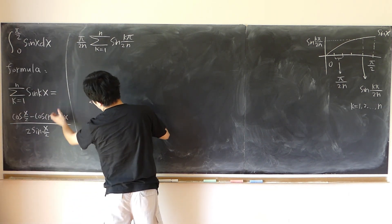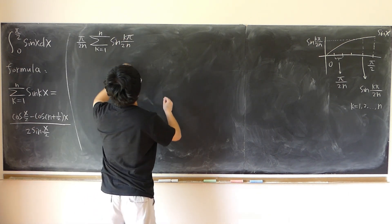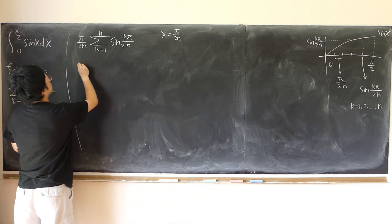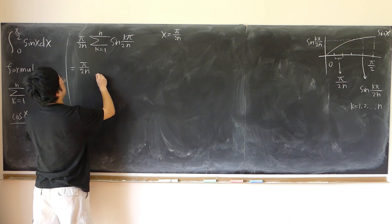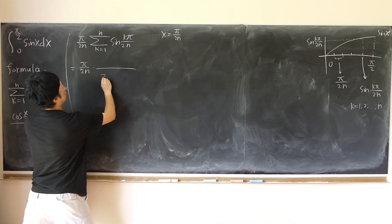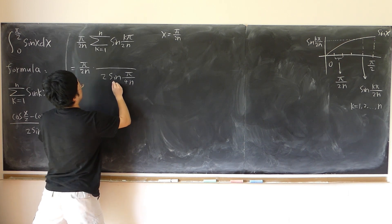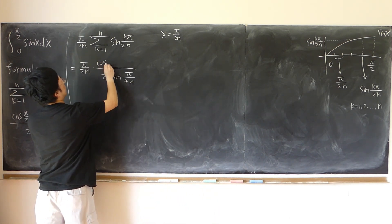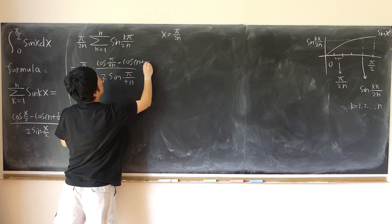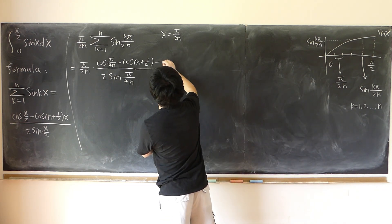I'm going to use the formula I just proved. This is a sum of sine kx, so we treat x as π/(2n). According to the formula, this equals π/(2n) times: cosine(x/2) minus cosine((n + 1/2)x), all over 2 sine(x/2). With x = π/(2n), that means x/2 = π/(4n), and (n + 1/2)x = (n + 1/2) times π/(2n).